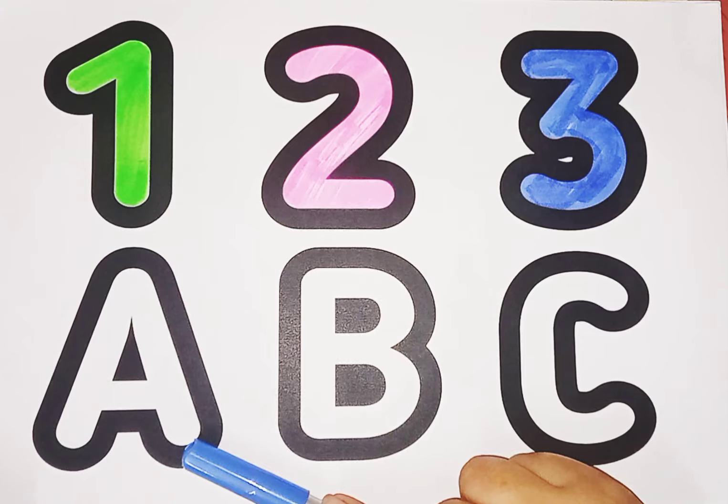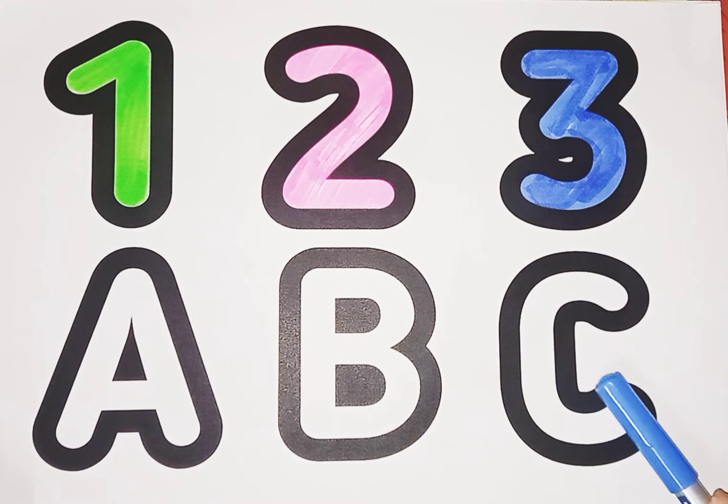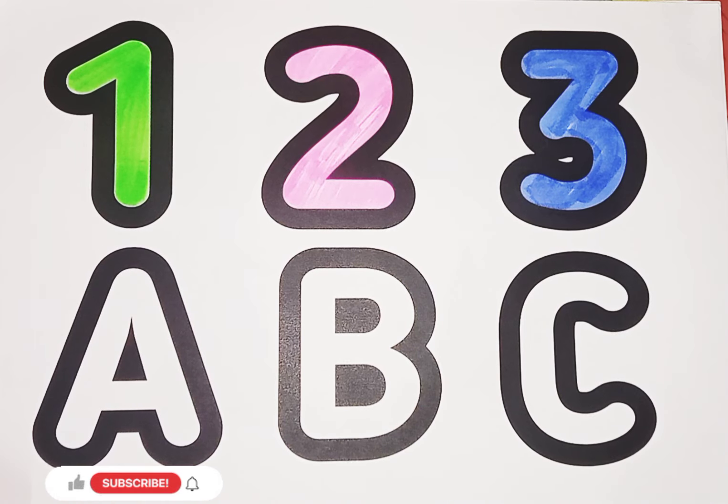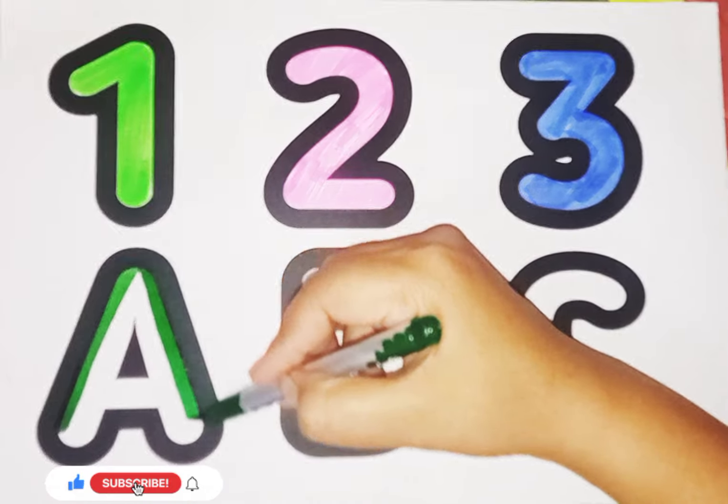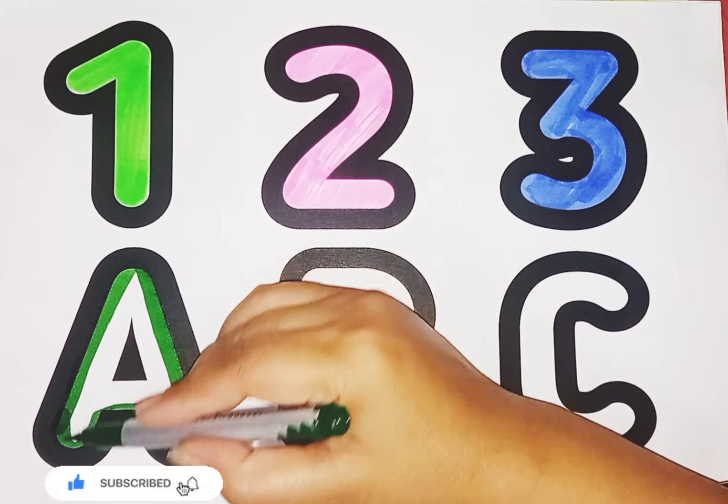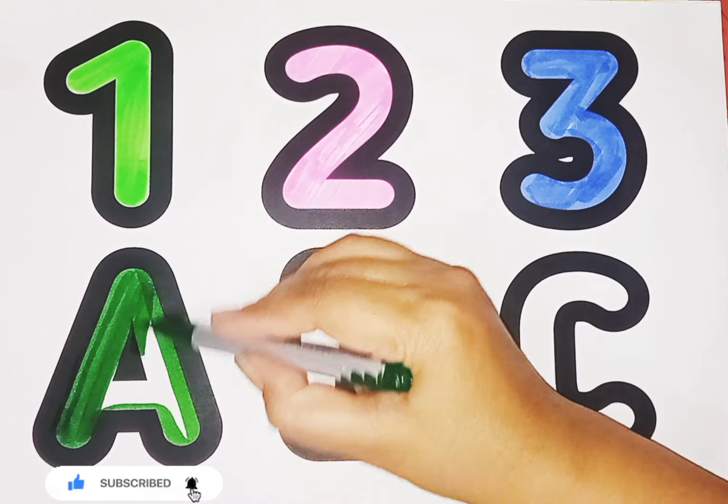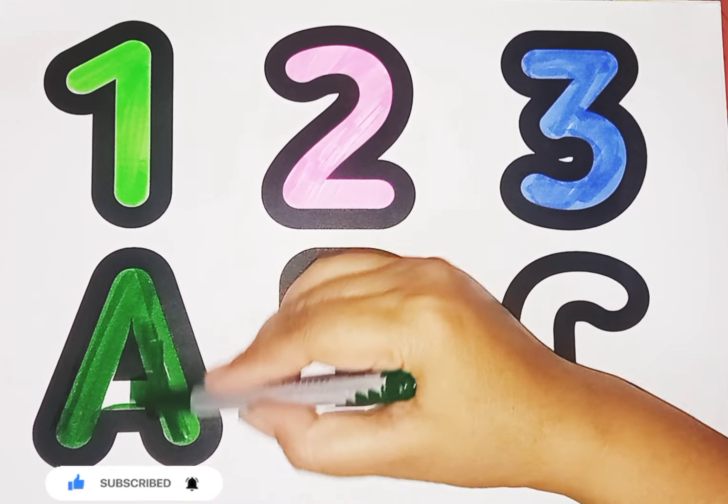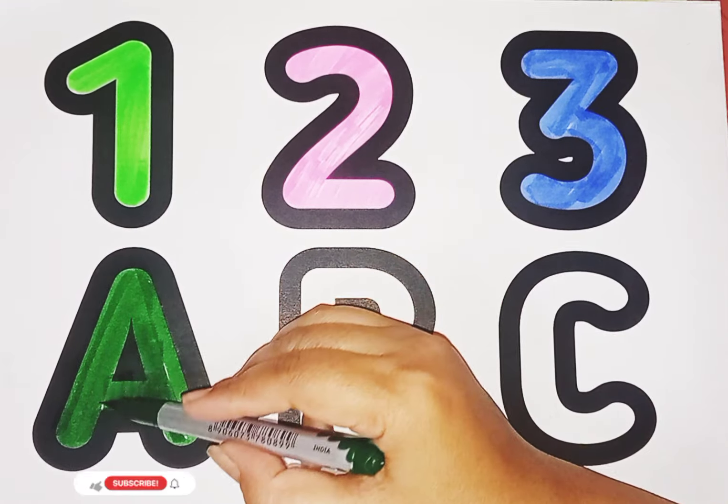Now we learn some alphabet A, B, C and their sound. Dark green color, Letter A. A is for Airplane. Letter A, sound is A, A, A, Airplane.